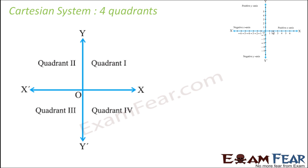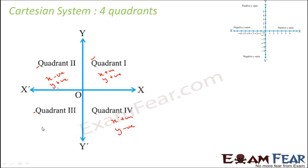Since we have a positive x-axis, positive y-axis, negative x-axis, and negative y-axis, you can break the entire Cartesian system into four quadrants. In the first quadrant, both x and y are positive. In the second quadrant, x is negative and y is positive. In the fourth quadrant, x is positive and y is negative. In the third quadrant, both x and y are negative. Sometimes equations will ask you to identify which quadrant a coordinate belongs to.